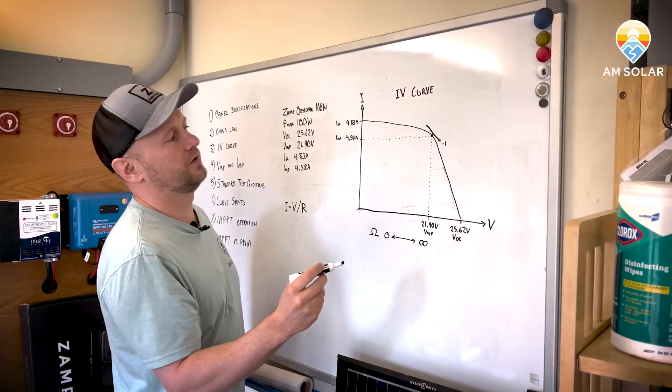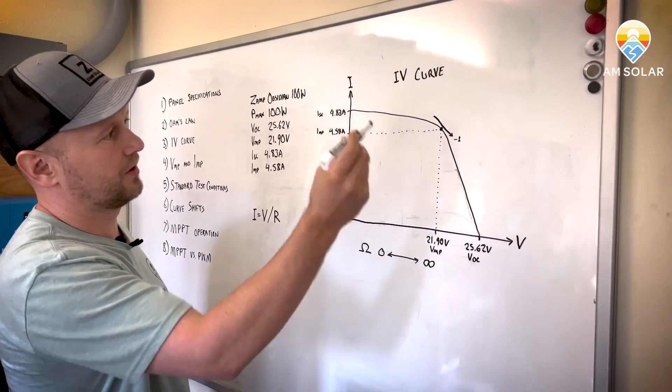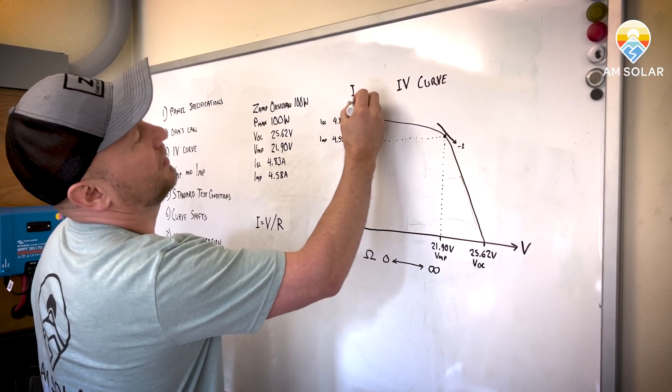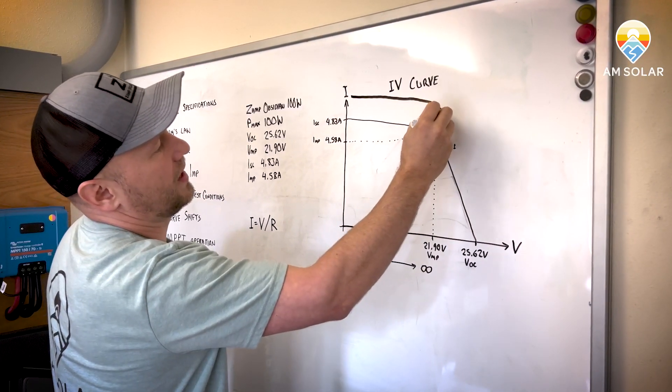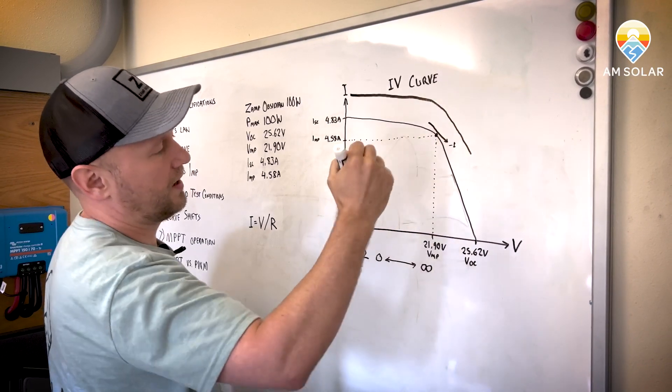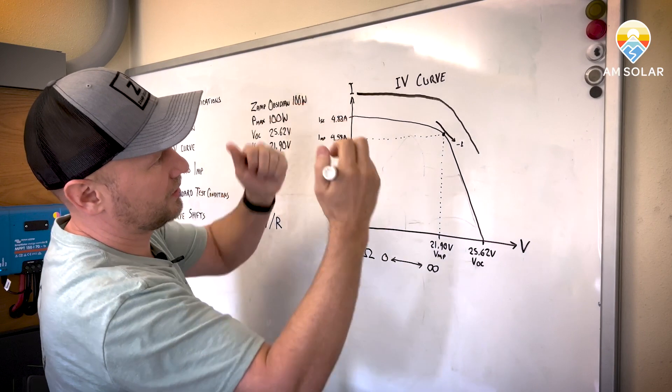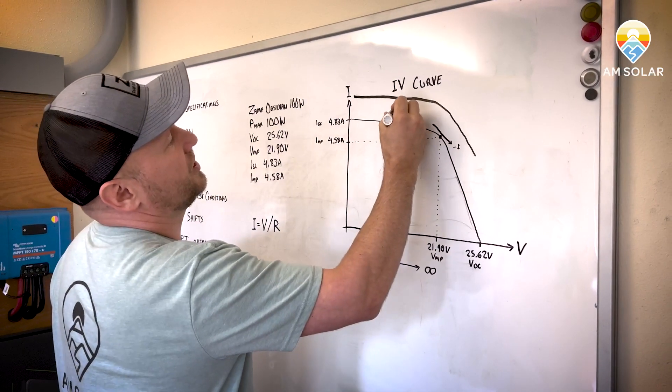So when you change the brightness or the temperature, the curve will shift. If you got more bright, like if you had some cloud edge effect where you had the sun and then a cloud right next to it, that was really bright. So you had a little bit more sun, the curve would shift upwards.